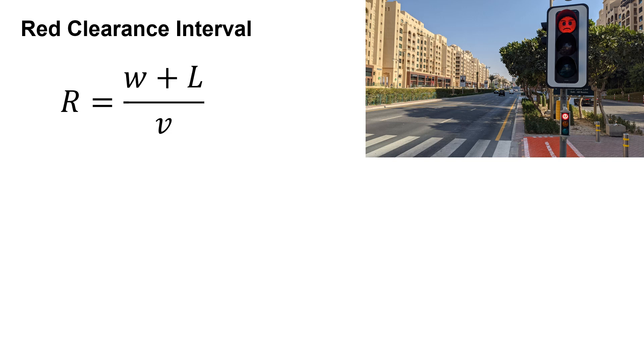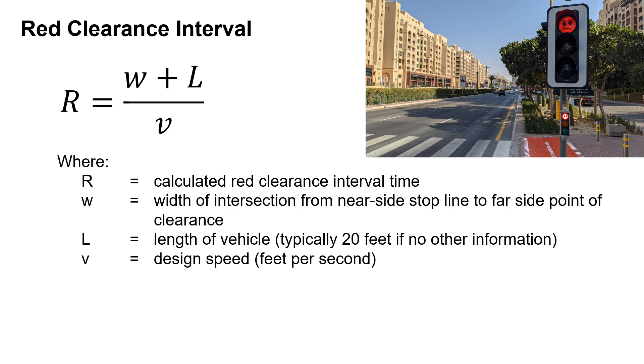To calculate the red clearance interval, we have our equation for the calculated red clearance interval time is equal to the width of the intersection, and that's starting at the near side stop line to the far side point of clearance. So when are you fully clear of that intersection where a conflicting vehicle would not strike the vehicle there, plus the length of the vehicle—and you can assume 20 feet unless there's other information provided—divided by the design speed in feet per second.